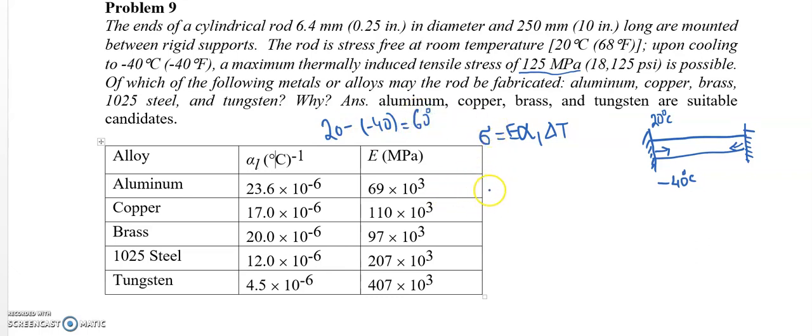So for this, if we want for each of this alloy or metal, we can determine this value. So for example, for this, it is 69 times 10 to the power 3 MPa times 23.6 times 10 to the power minus 6, multiplied by 60 degrees centigrade. So in this case it will be 97.7 MPa for aluminum.